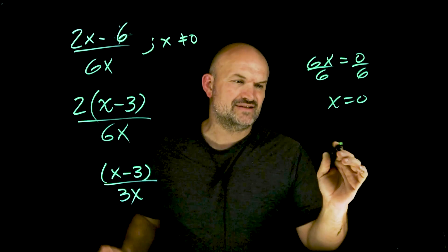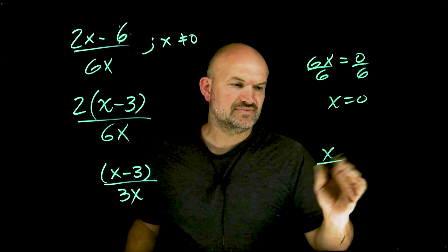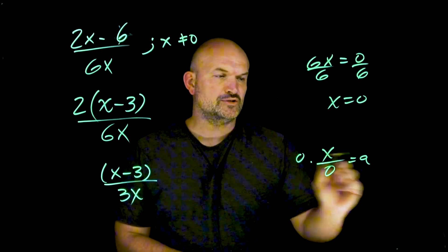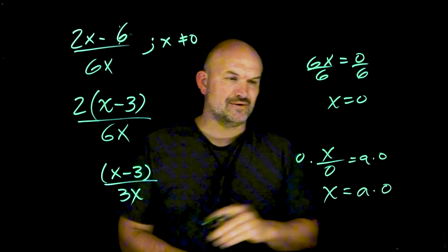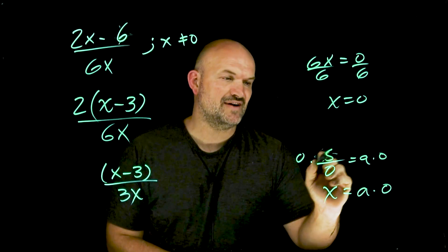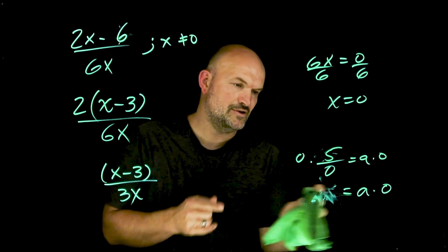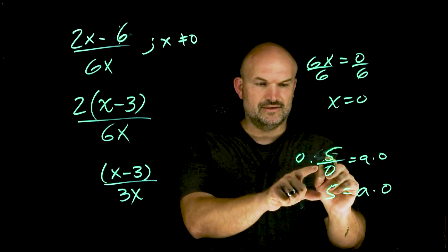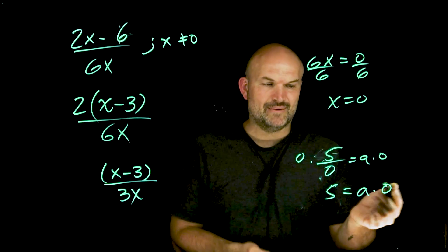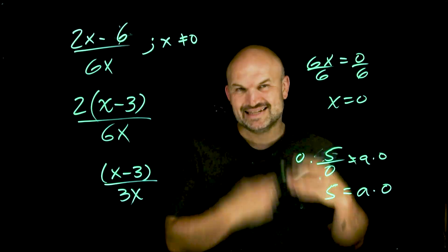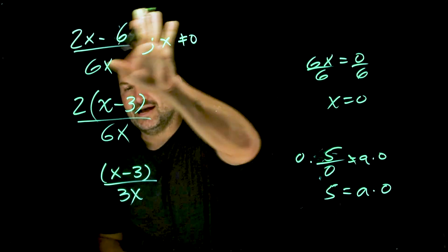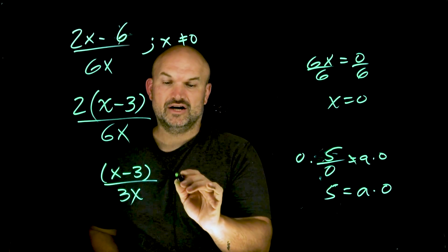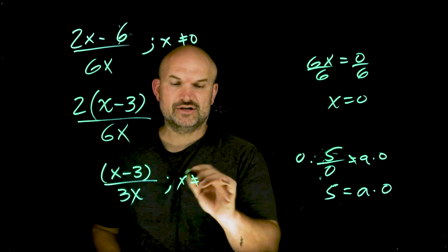Why can't you divide by zero? Let's think about it. If five divided by zero equals some number A, then multiplying both sides by zero gives five equals A times zero. But anything times zero is zero, so five equals zero — that doesn't make any sense. Therefore we say X cannot equal zero, and we bring that restriction down to our simplified expression: X cannot equal zero, because zero will still make the denominator undefined.